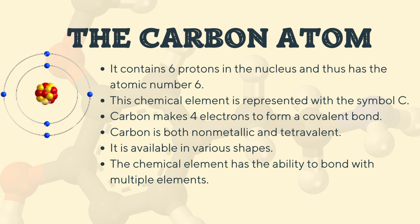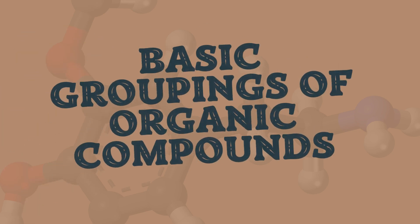Since carbon has six electrons, that means it has four electrons that can form a covalent bond — it has four valence electrons, so it is tetravalent. Two electrons will be on the first shell, and the remaining four will be on the outer shell. These are the ones that will be able to form bonds. This atom has an ability to bond with multiple elements and is available in various shapes. The carbon atom can form single bonds, double bonds, even triple bonds.